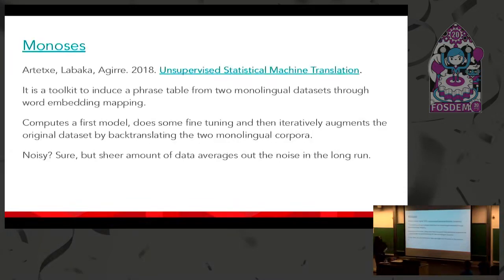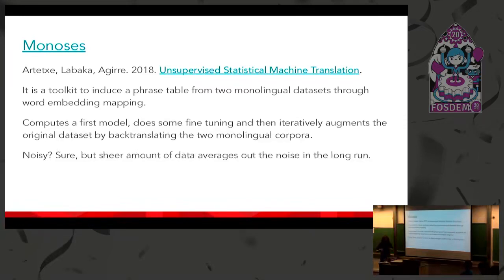Today we are presenting MonoSES. MonoSES stems from a paper by three scientists, and it's a toolkit to create phrase tables from two monolingual datasets through word embedding. It then creates a Moses model with this noisy data, does some fine tuning, and iteratively augments the dataset by translating itself. You can start with one million sentences and rapidly reach ten million because you try different combinations. It's noisy, but the sheer amount of data averages out the noise in the long run.